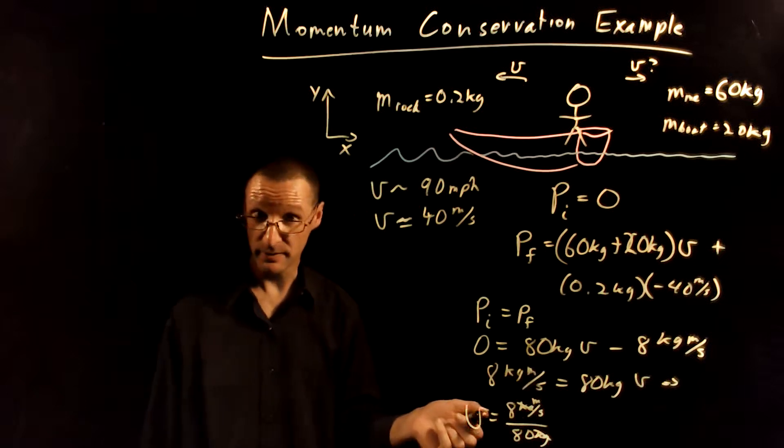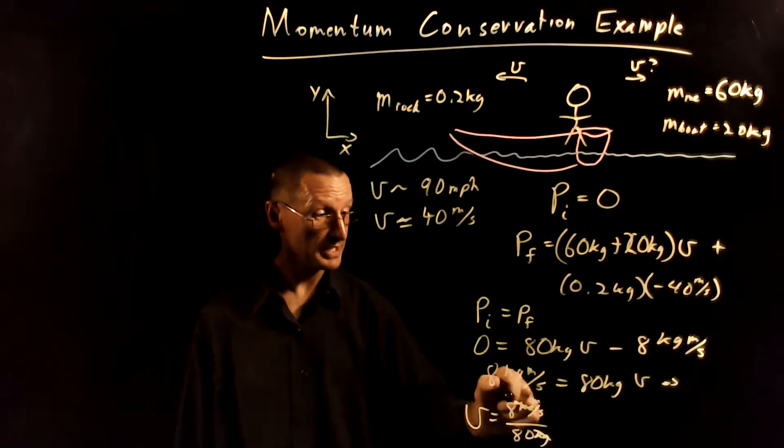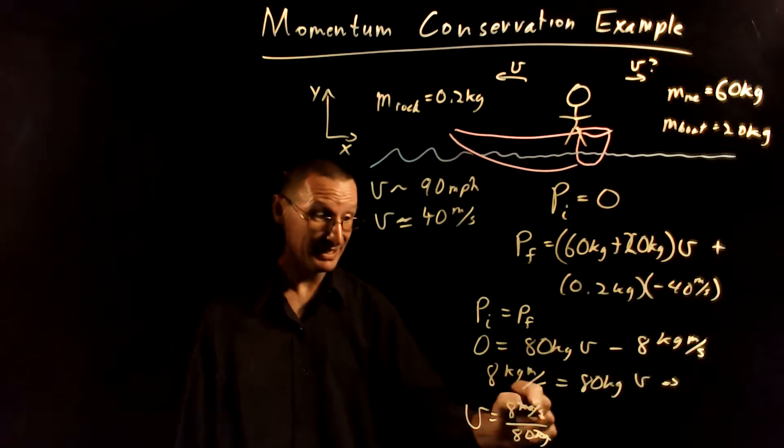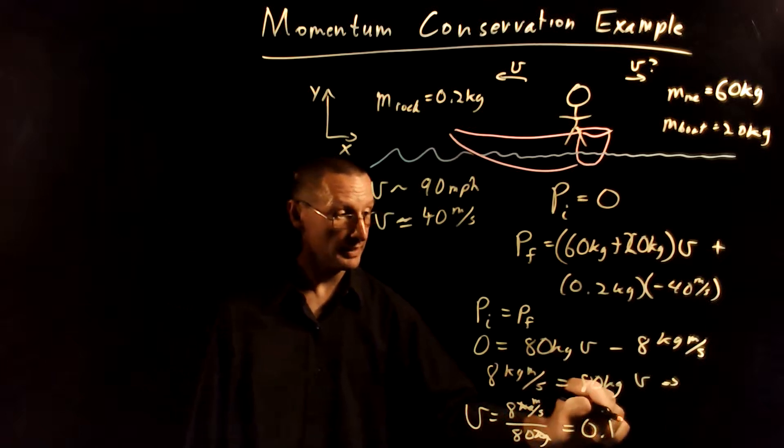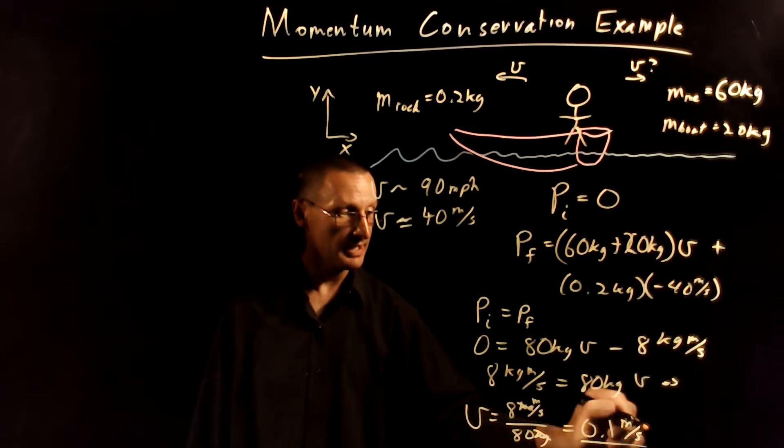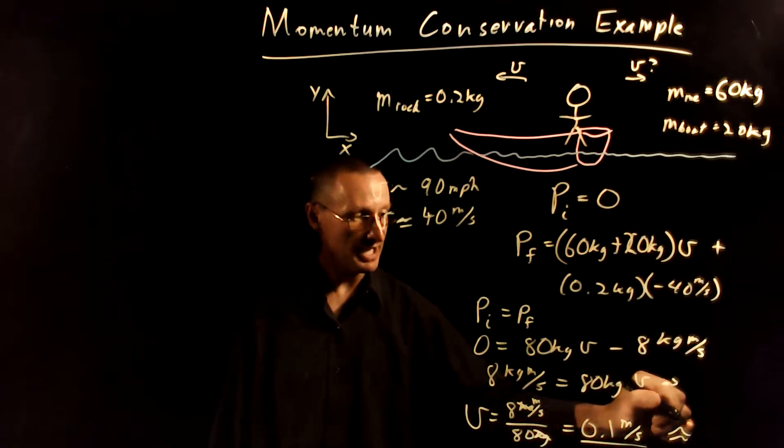The kilograms will cancel, we're left with meters per second, so our units are coming out right. And then 8 divided by 80 is going to be 0.1, and that's meters per second.